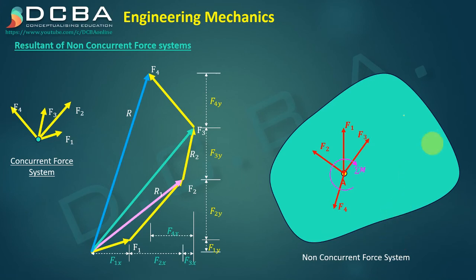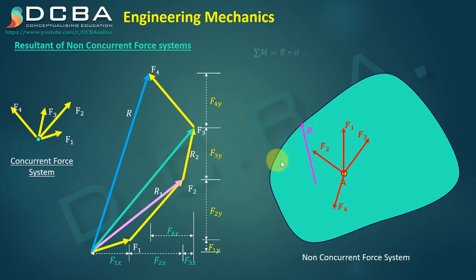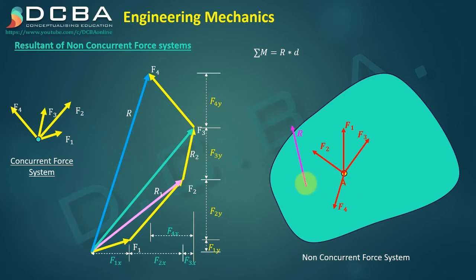We can find the resultant R of all these forces. R will originate from the point where we brought the concurrent forces, and we also have the moment ΣM. R can then be shifted appropriately to a distance d such that it causes the same moment M at point A. By shifting R to a suitable distance d, it has the translational effect of all these concurrent forces plus the rotational effect represented by the moment M.